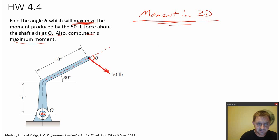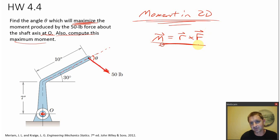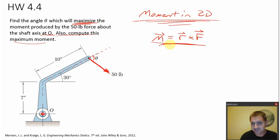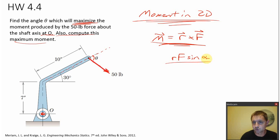So what angle theta do we need to maximize that moment? What is the vector equation for a moment? R cross F — hopefully you have this memorized. The moment is R cross F. The magnitude of R cross F is R times F times the sine of alpha, where alpha is the angle between the R and the F vector.